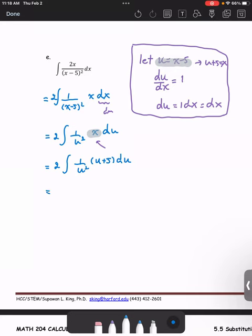And then we're going to work on using the appropriate rule to find the antiderivative. In this case, let's distribute 1 over u squared to the quantity u plus 5.